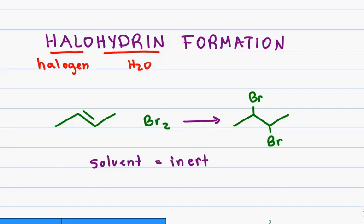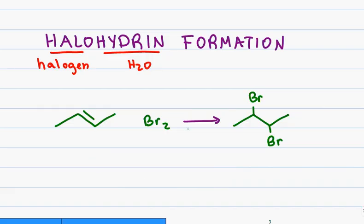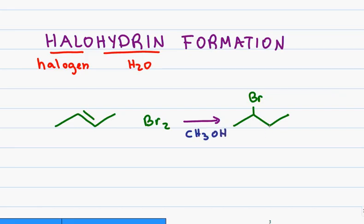For halogenation, you would use a solvent that doesn't react, for example CH2Cl2, CCl4, or anything similar. However, if you carry out this reaction in a solvent such as H2O, instead of getting two bromine atoms added, you're going to get a bromine on one carbon and an alcohol on the second. If you swap the solvent for an alcohol, for example methanol or CH3OH, your product will have a bromine on one carbon and an OCH3 on the second, forming an ether.